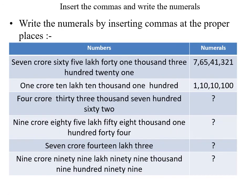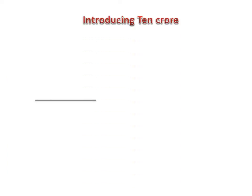Now we will write the numerals by inserting commas at the proper places. This is a fun practice for you, dear students. First: seven crore sixty-five lakh forty-one thousand three hundred and twenty-one — the proper commas are shown in the numerals column. Second: one crore ten lakh ten thousand and one hundred. The remaining examples are for you to complete.